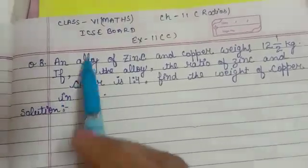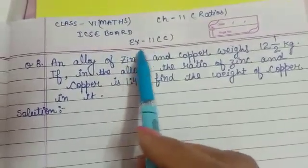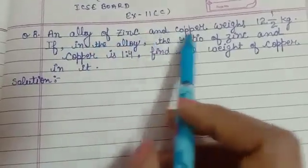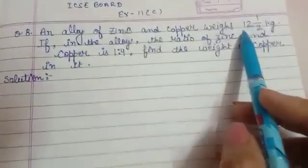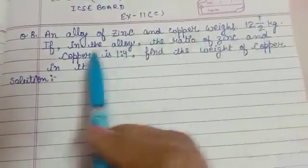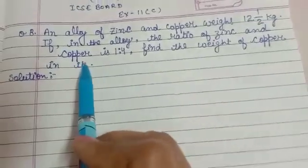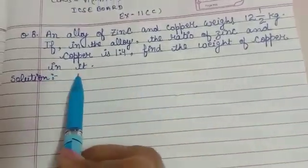Hello everyone, this is Class 6 Maths video of Chapter number Ratios and Exercise 11C, Question Number 8. Let's start. An alloy of zinc and copper weighs 12 and 1/2 kg. If in the alloy the ratio of zinc and copper is 1:4, find the weight of copper in it.